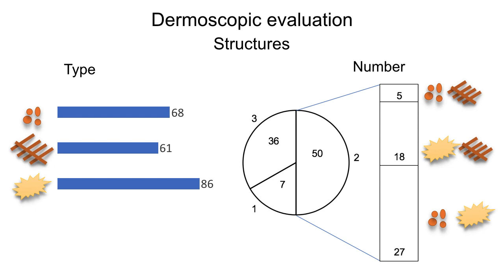In the dermoscopic evaluation, the majority of lesions presented structureless areas, followed by clods and by lines and network. Usually, in almost all cases, this lesion presented two or three of these patterns.